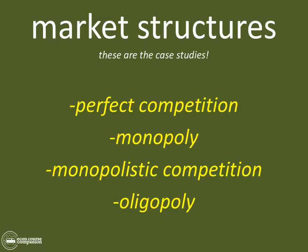The four market structures are perfect competition, monopoly, monopolistic competition, and oligopoly. These are what exist in the marketplace that we are going to apply the production, costs, revenues, and profit model to. That model operates in theory inside firms when they are trying to decide what the perfect price is for each particular good they make. These market structures are structures that exist on the outside of the firm.